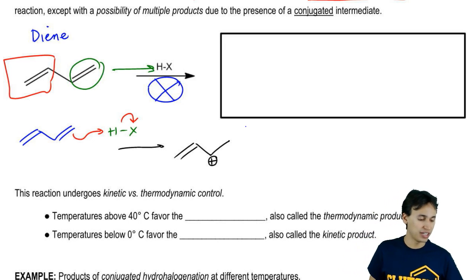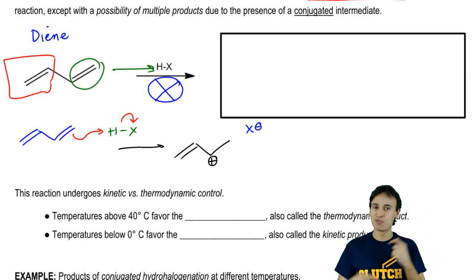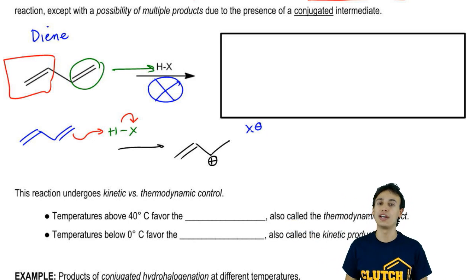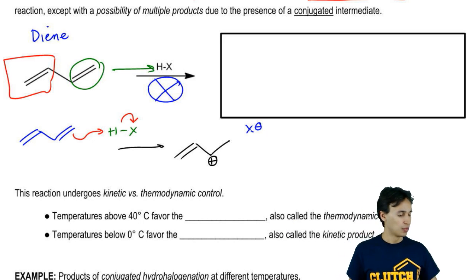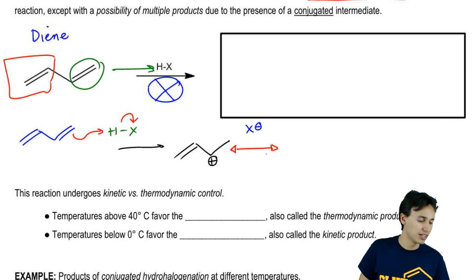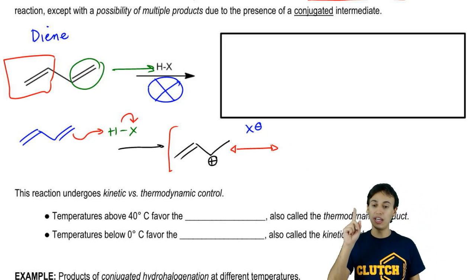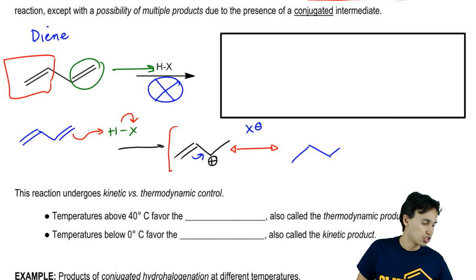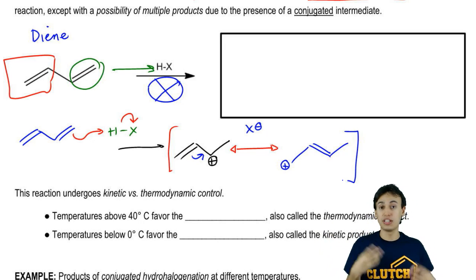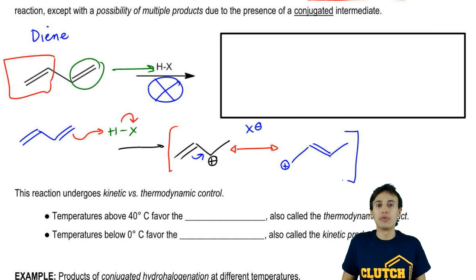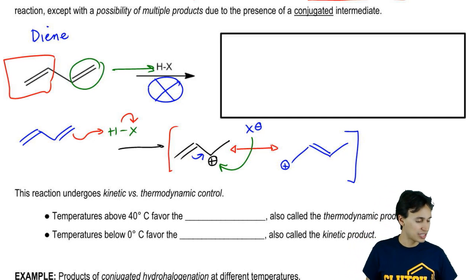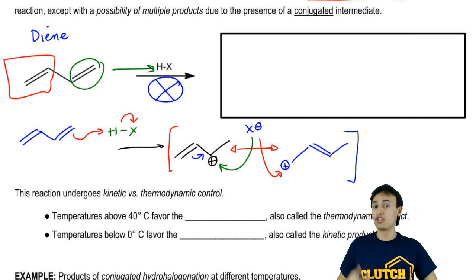Now we have that carbocation and X⁻ present. You might think X⁻ just hits the positive charge like in normal hydrohalogenation — and you're right, but there's one extra complication: this positive charge is conjugated, so we have to draw a resonance structure. That resonance structure involves one arrow swinging like a door hinge, giving a double bond here and a positive charge on the other end. Now there are two different reactive sites, and X⁻ has the option to attack either carbon — so two different products are possible.